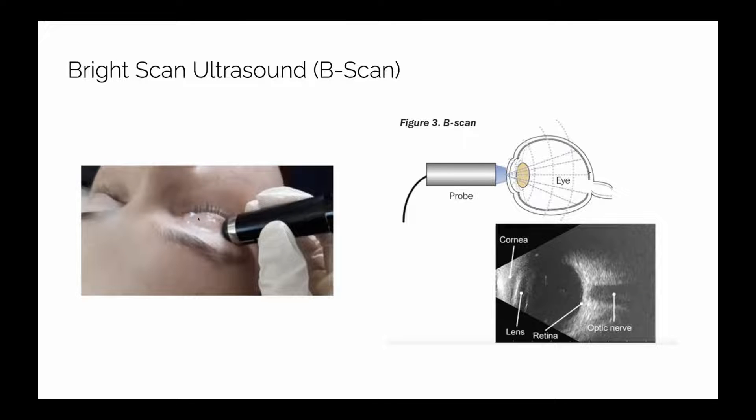You have a similar concept: a little bit of gel over a closed eye, and you'll get similar looking appearances. You can see the vitreous, the retina, and the optic nerve. That's a really good optic nerve right there.